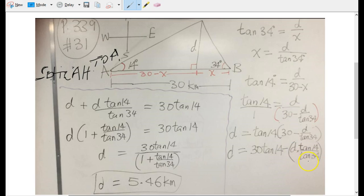Now we have, from this side, we move over here to finish solving. Since we have two terms, 30 tan 14 is one term and this side is another term separated by subtraction. We add d tan 14 over tan 34 to both sides.